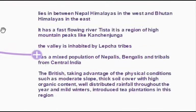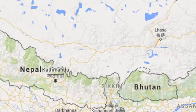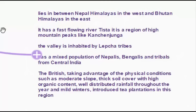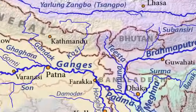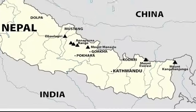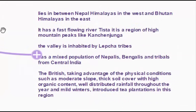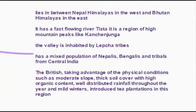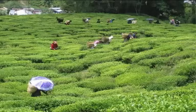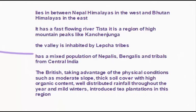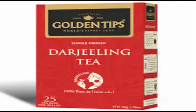The Darjeeling and Sikkim Himalayas lie between Nepal Himalayas in the west and Bhutan Himalayas in the east. It has a fast-flowing river called Teesta, and is a region of high mountain peaks like Kanchenjunga. The valley is inhabited by Lepcha tribes and has a mixed population of Nepalese, Bengalis, and tribals from central India. The British took advantage of the physical conditions — moderate slope and thick soil cover — and introduced deep plantation in this region.